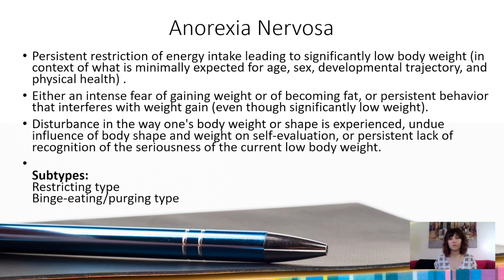Also, the removal of lack of menstruation for three months. For several reasons, some people were not experiencing lack of menstruation despite all the other characteristics of anorexia and were getting misdiagnosed. Also, with the advent of continual birth control, it's very difficult to tell if a period is not happening because of birth control or because of lack of intake. So that's the general overview of anorexia nervosa.